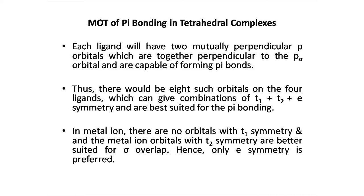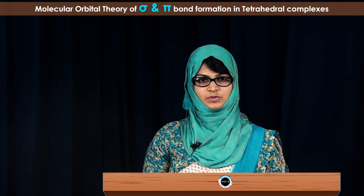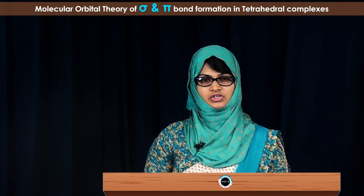However, when we look at the metal combinations, there is no T1 symmetry available on the metal. E symmetry can be utilized since it was not used in sigma bond formation. T2 symmetry is better suited for sigma bond formation and cannot be utilized again for pi bond formation. Therefore, although the ligand combinations provide all three symmetries — T1, T2, and E — only E symmetry is available for the formation of pi bonding in tetrahedral complexes. The E symmetry, representing DX²-Y² and DZ² orbitals of the metal, overlaps with the pi ligand combination of E symmetry to give the pi bonding molecular orbitals.